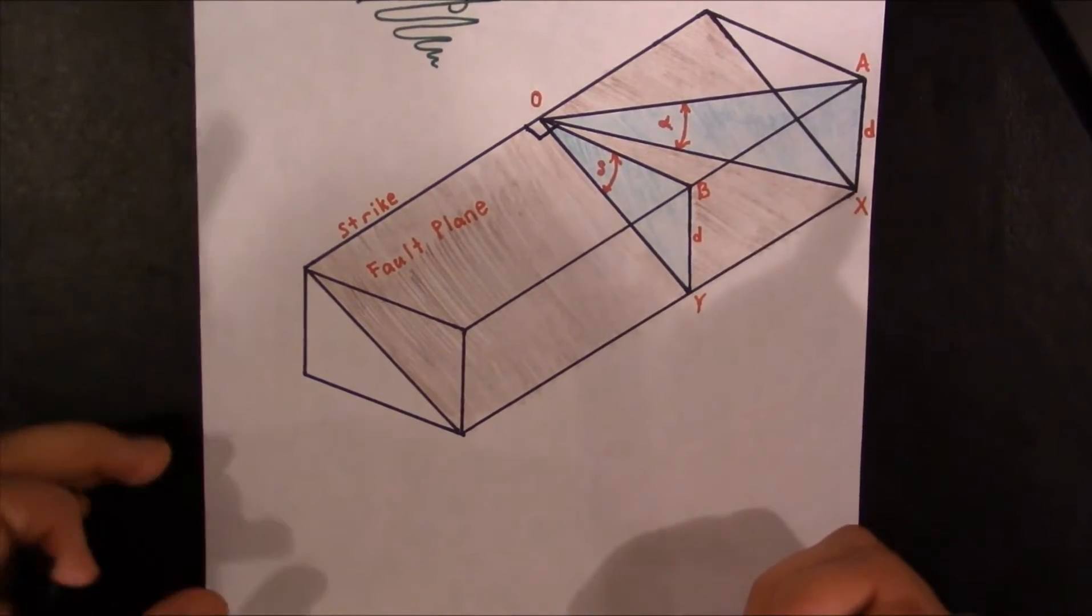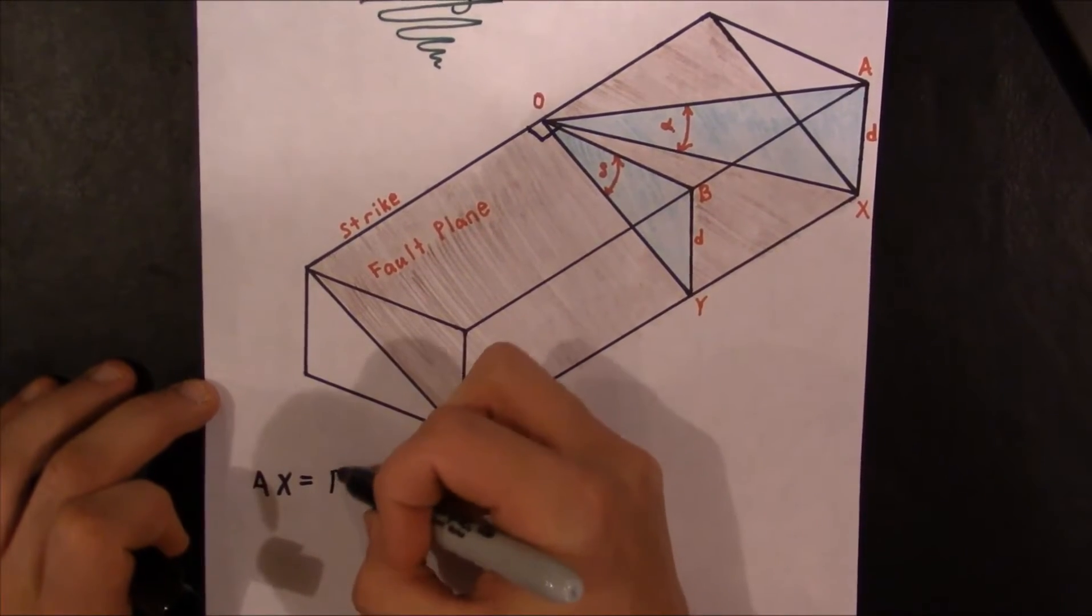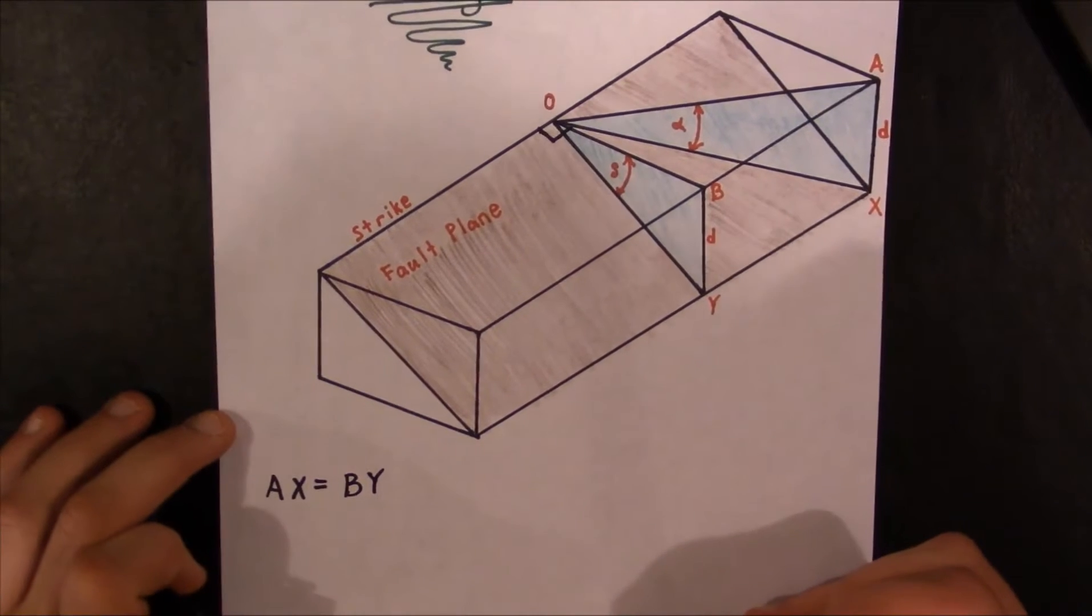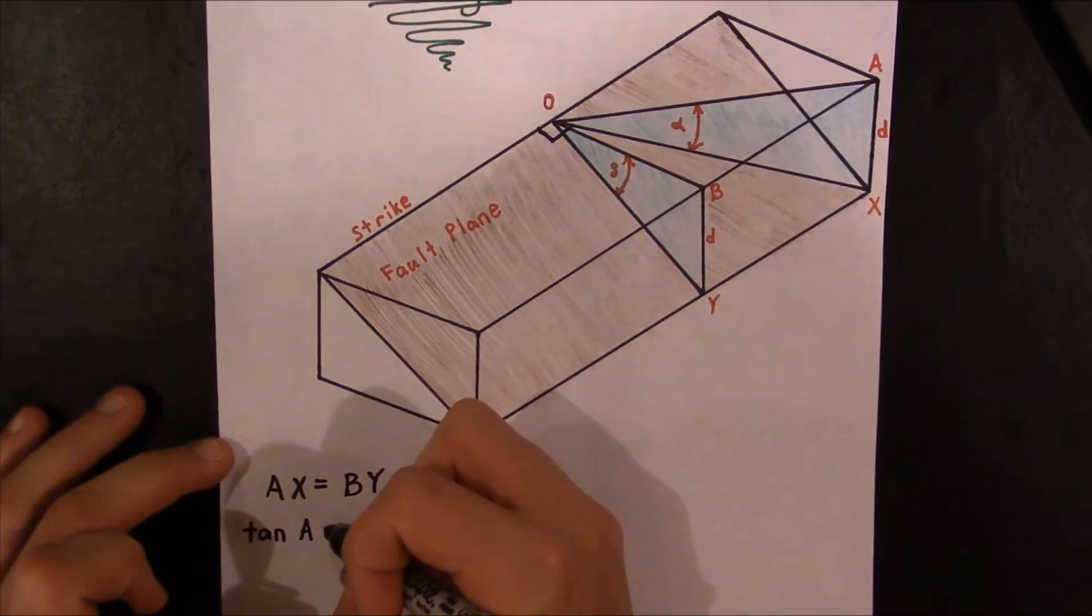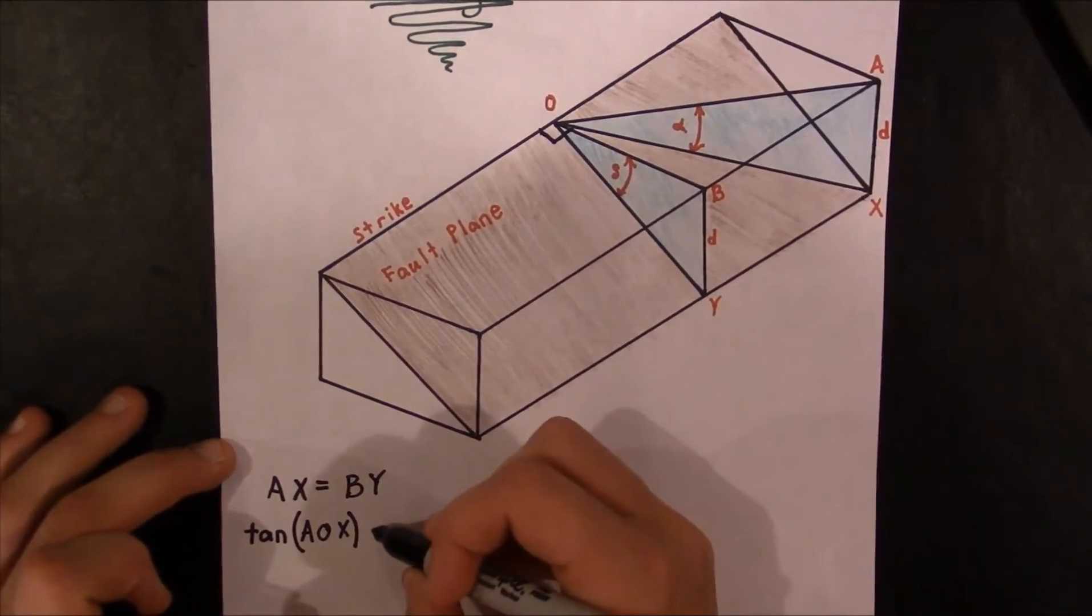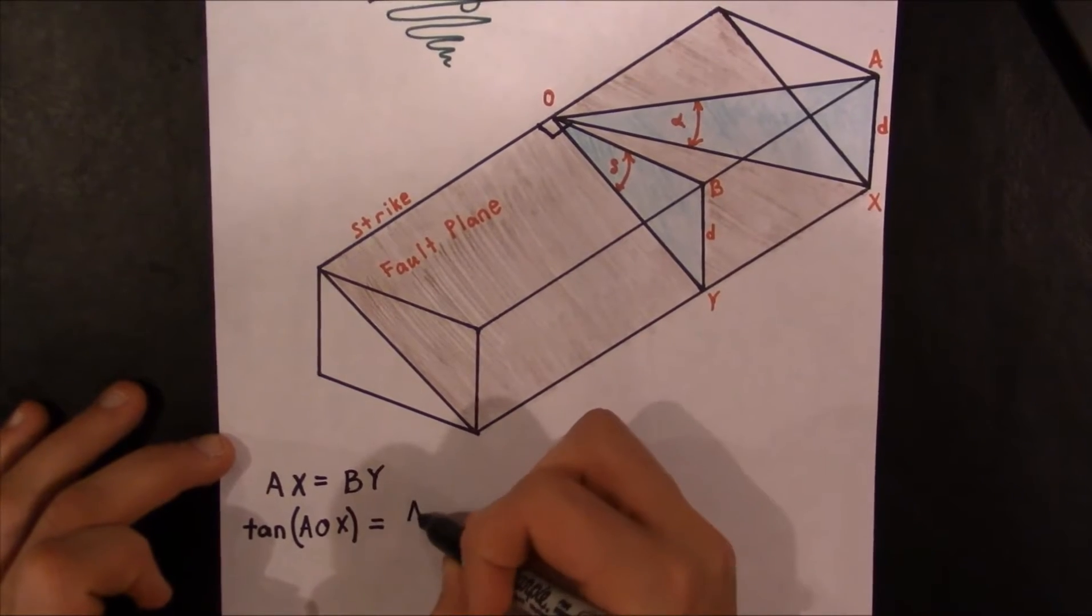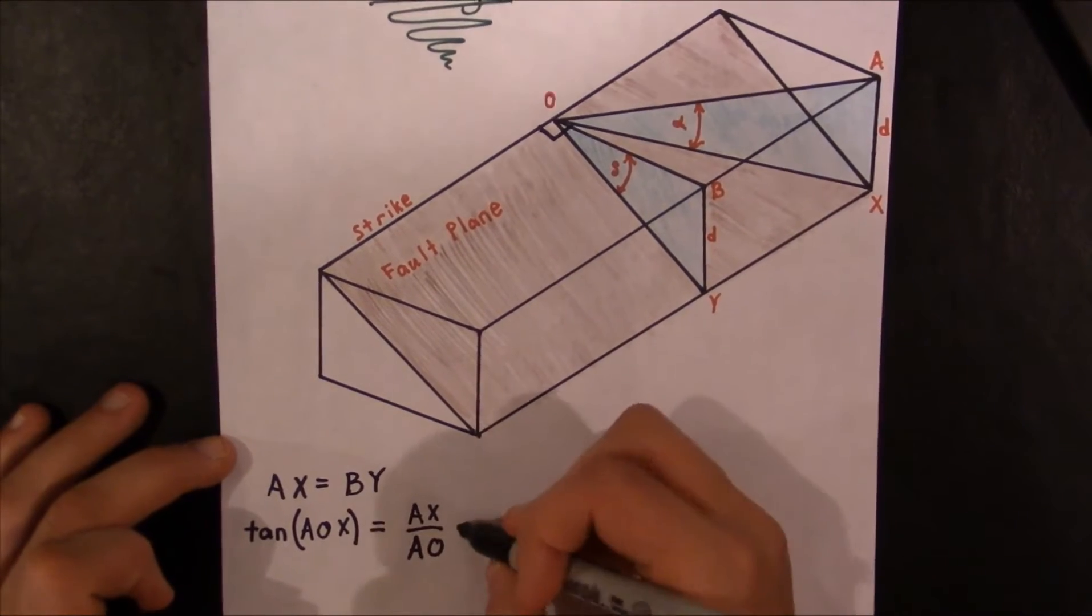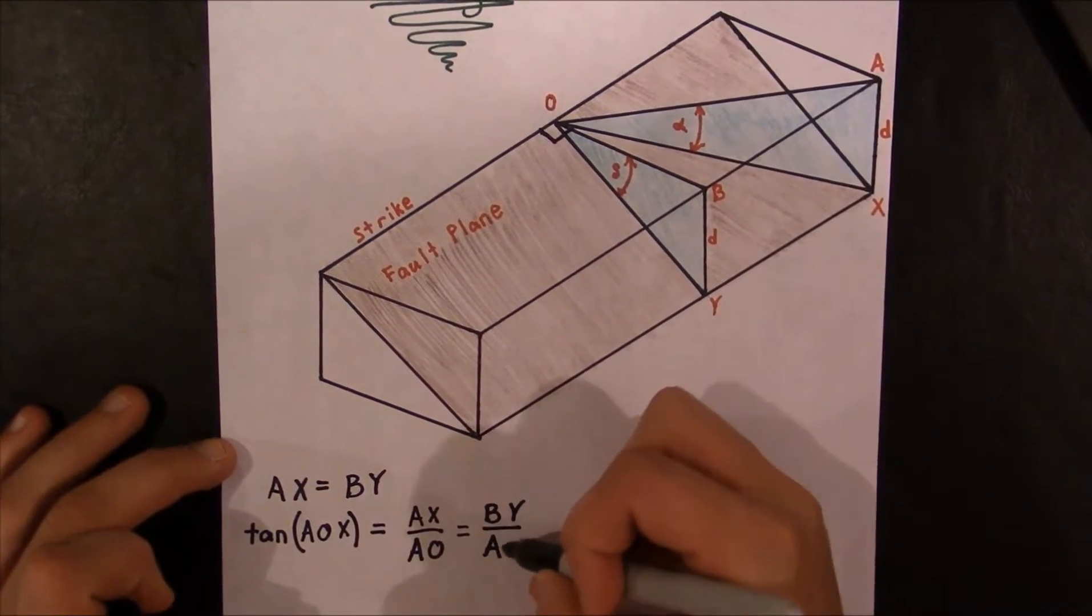So what we can do is we can say that Ax is equal to By. That's Ax and By. All right, so if we know this, we can say that the tangent of AOX, that's this angle here, this apparent dip, is equal to the opposite side, which is D in this case, or Ax. Let me just go ahead and write Ax and then over AO. But we know that Ax is equal to By, so let me just go ahead and write in By here.